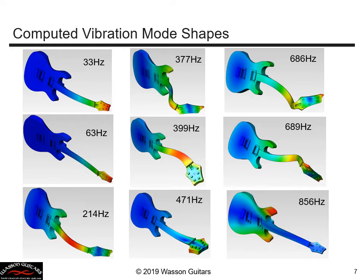When we tap a string it vibrates at its natural modes of vibration. What happens if we tap the guitar structure? Here I've taken the finite element model that I developed and I'm doing what's called a modal analysis. Here are the first nine modes of the structure: the lowest mode is 33 Hz, the second is 63 Hz, the third is 214 Hz, and so on. Just like the string, my structure has preferred ways it wants to vibrate and the frequencies associated with those modes.